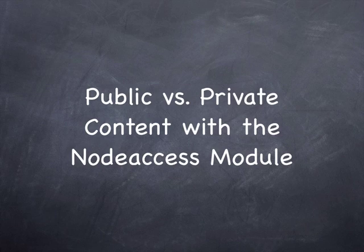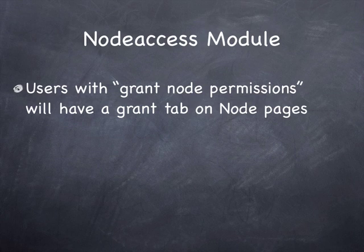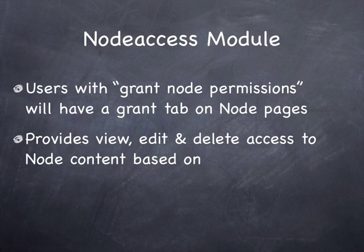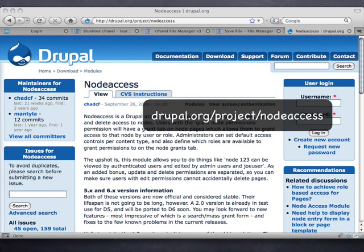We'd like to talk about public versus private content with the Node Access module. The Node Access module lets users with the grant node permissions have a grant tab on their node pages. If they've got a page, blog, or story, they'll be able to provide view, edit, and delete access to that content based on either the role or the user. This helps you make a page private or public for viewing, editing, and deleting content.